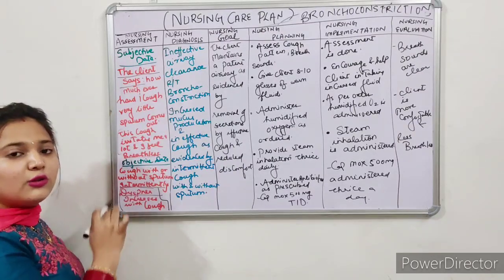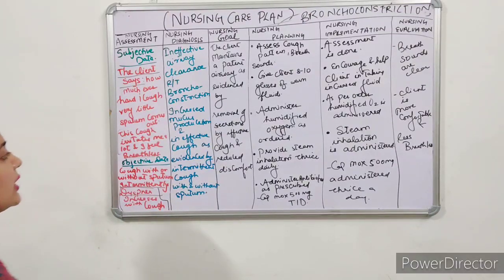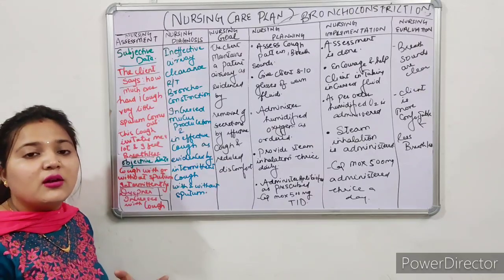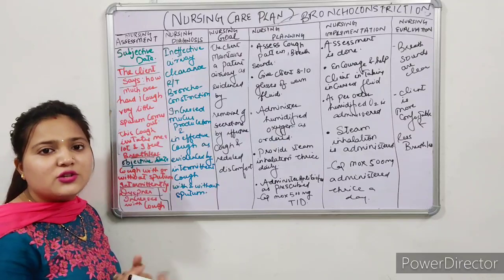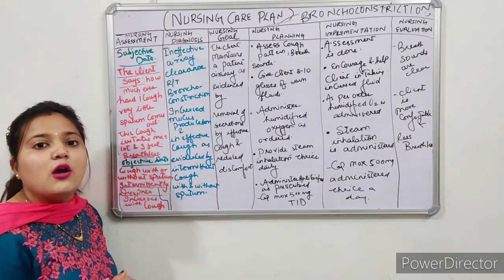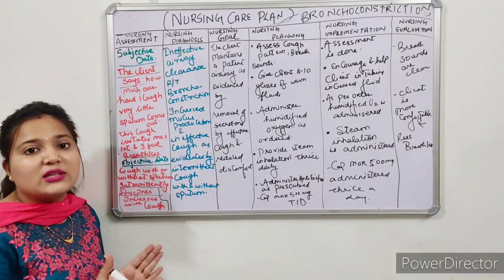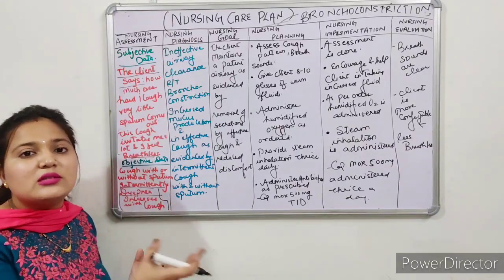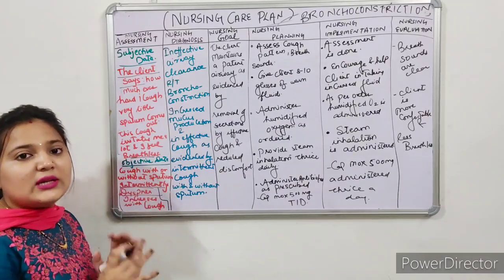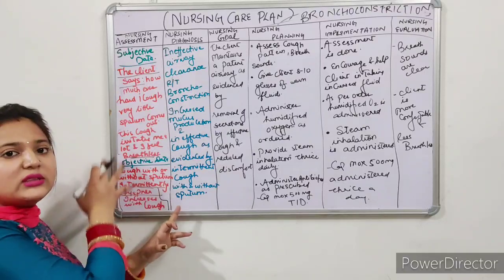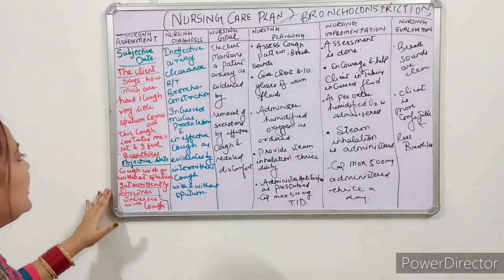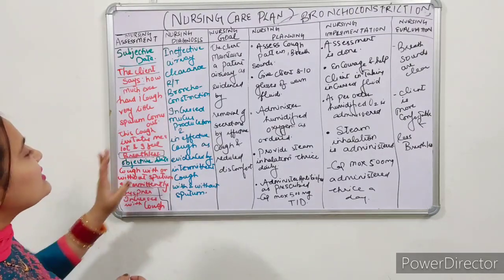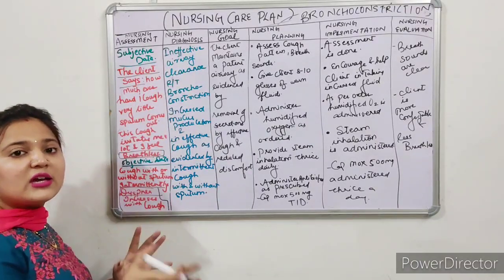The patient will also report other symptoms. For example, they may say they have no energy for any work — that is activity intolerance. If the patient has no knowledge about their condition, we create a diagnosis of knowledge deficit. The patient may say they feel very tired — that is fatigue. For each symptom we make a diagnosis, so in one NCP we will create 3-4 nursing diagnoses. Now after collecting subjective and objective data, we proceed to nursing diagnosis.